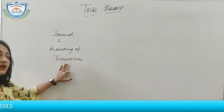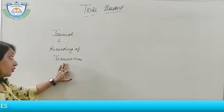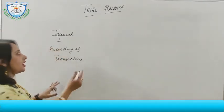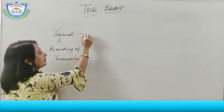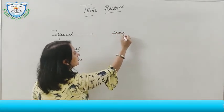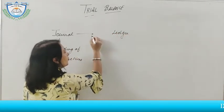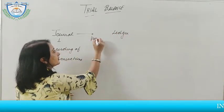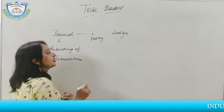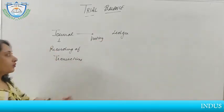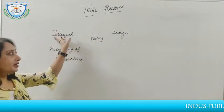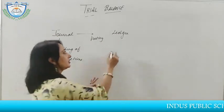First, we make the record of transactions in journal. After that, we prepare ledger posting. This process is called posting. First, we prepare the journal, then we do posting to the ledger.